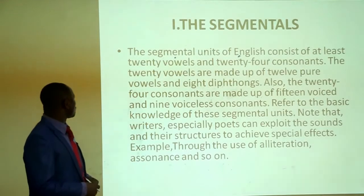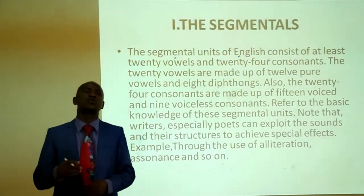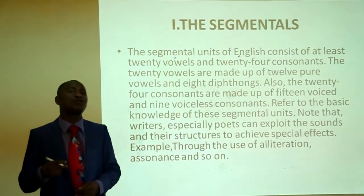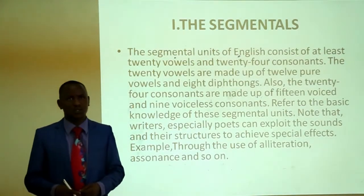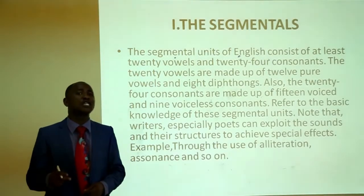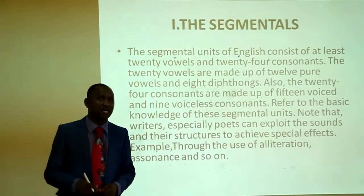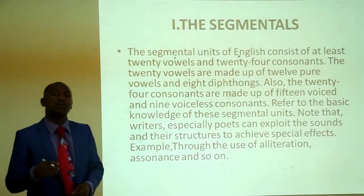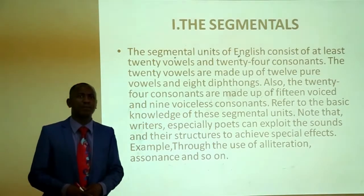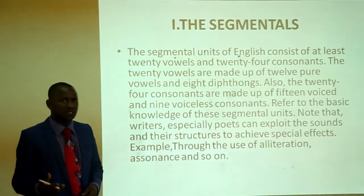The segmental units of English consist of at least 20 vowels and 24 consonants. The 20 vowels are made up of 12 pure vowels and 8 diphthongs. The 24 consonants are made up of 15 voiced and 9 voiceless consonants. Note that writers, especially poets, can exploit the sounds and their structures to achieve special effects — for example, through the use of alliteration, through the use of assonance, and so on.